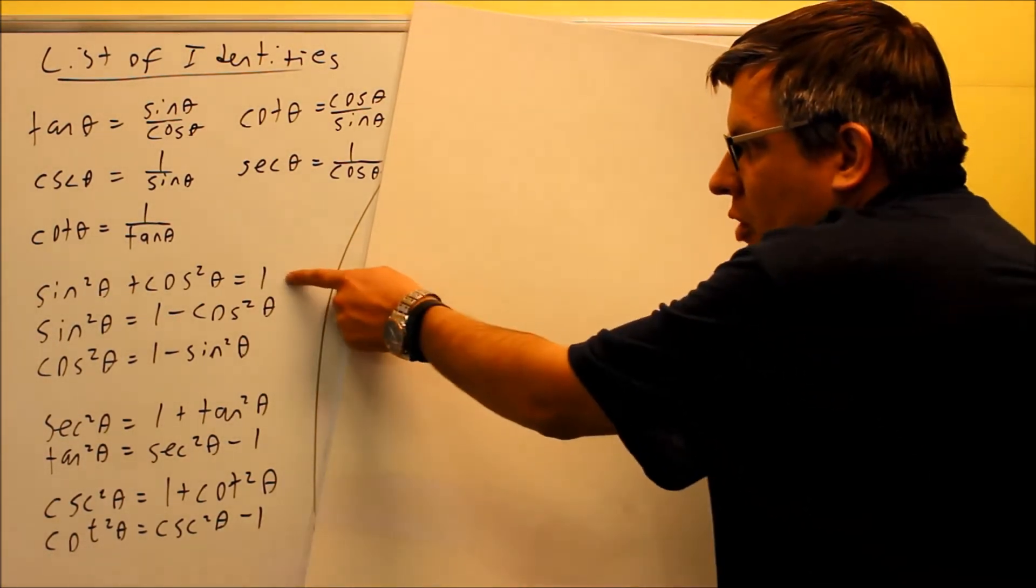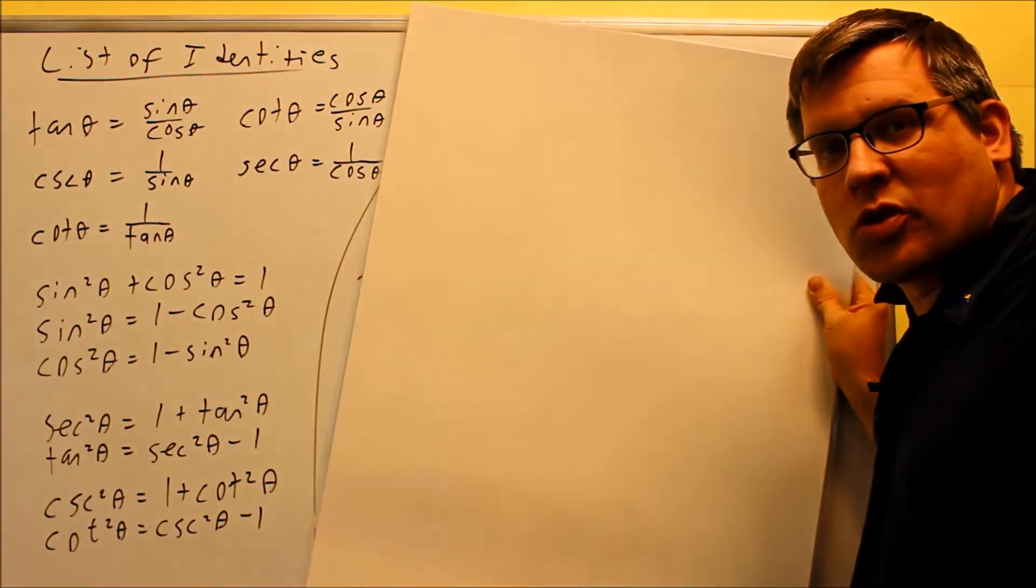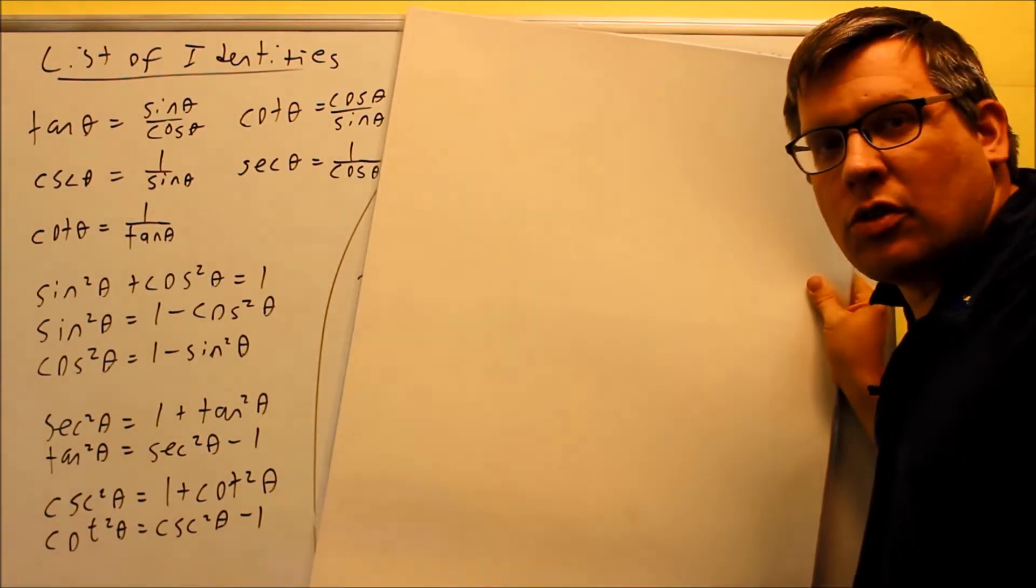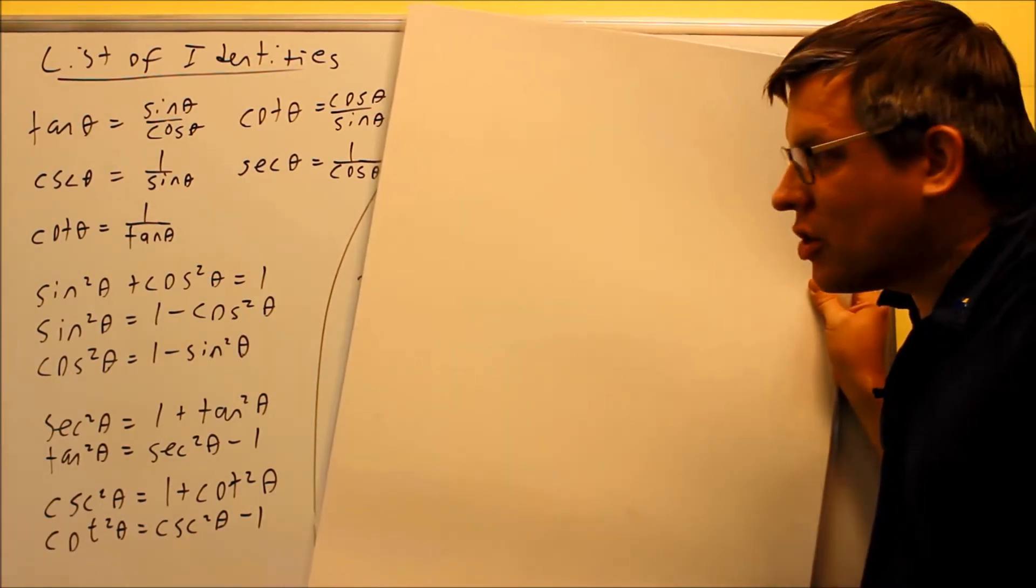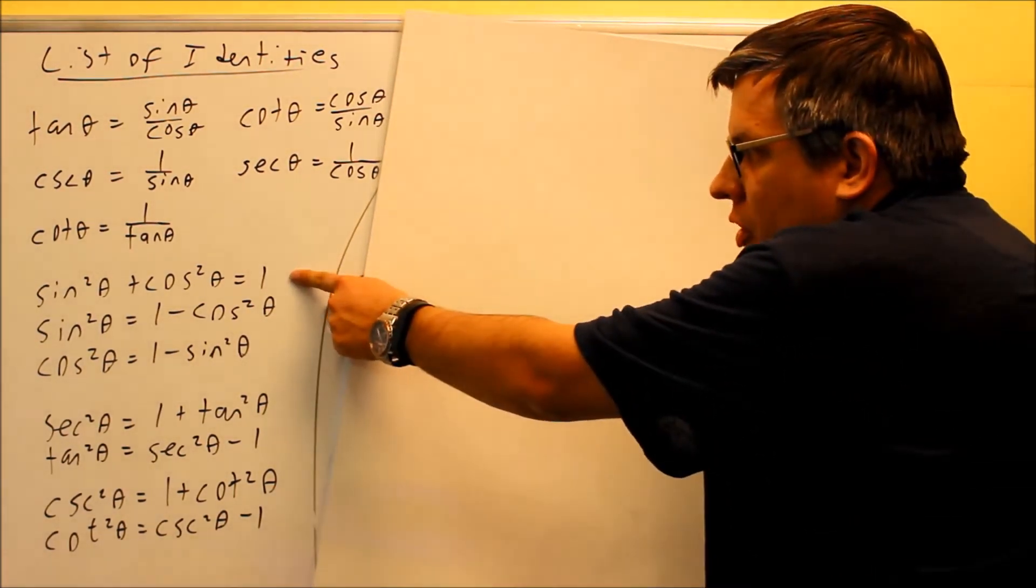Then the other one that comes up a lot is this one: sine squared plus cosine squared equals one. That comes right from the unit circle because the formula is x squared plus y squared equals one. We talked about that, where the formula comes from.